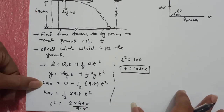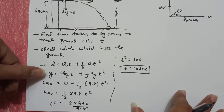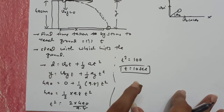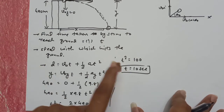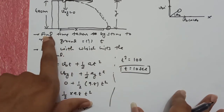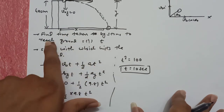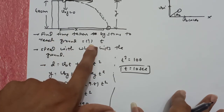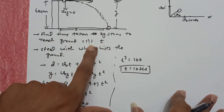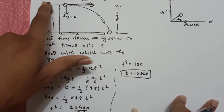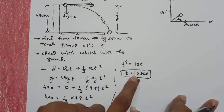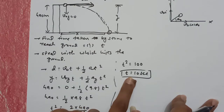मतलब 490 का distance cover करने के लिए उसको time लगेगा 10 seconds. So यह हमें मिला: find the time taken by stone to reach the ground — ground में आने के लिए उसको 10 seconds लगेंगे।